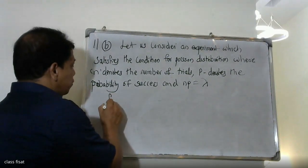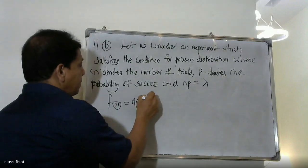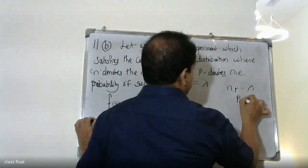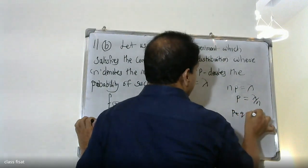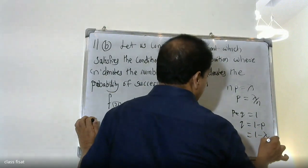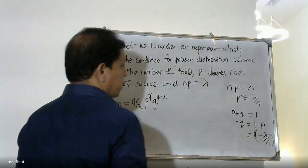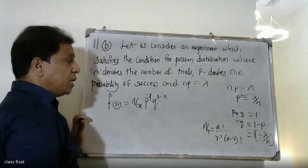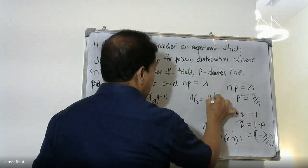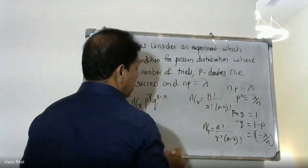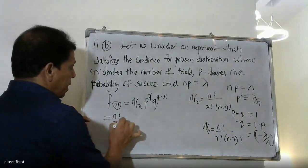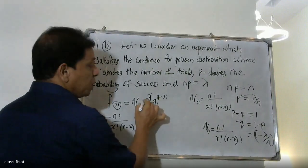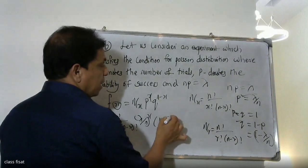In the binomial distribution formula, we have nCx times p raise to x times q raise to n minus x. Since np is equal to lambda, p is equal to lambda by n. Substituting, we get 1 minus p equals 1 minus lambda by n. So the formula becomes: lambda by n raise to x, times 1 minus lambda by n raise to n minus x.